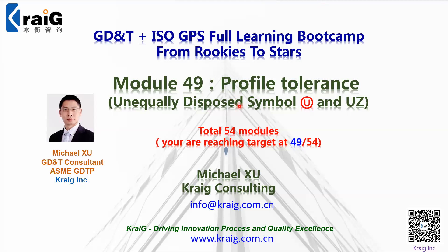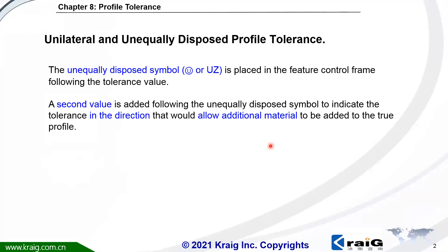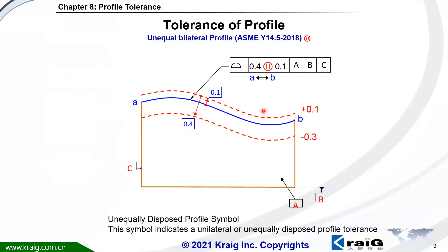Welcome to Module 49: Profile Tolerance with Unequally Disposed Symbol, U-Circle or UJ. So far we have learned that the profile tolerance value is equally distributed inward or outward. In this module, we are explaining how to express a tolerance zone that is unequally distributed. Here is the symbol U-Circle. U means unequally disposed profile symbol, which is only used in profile.